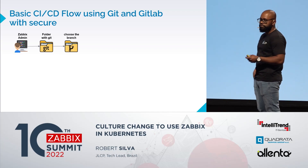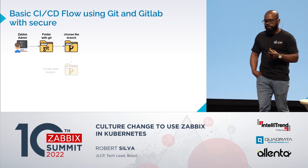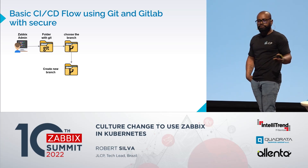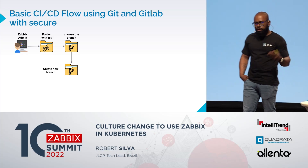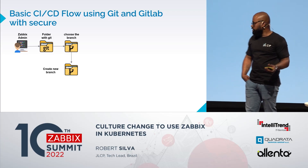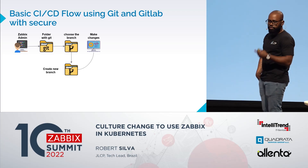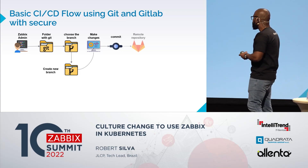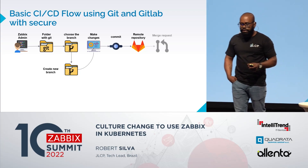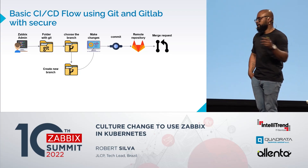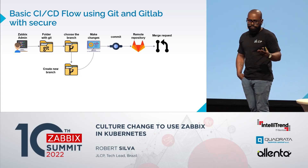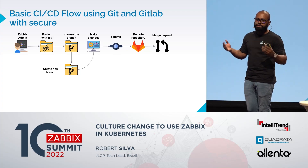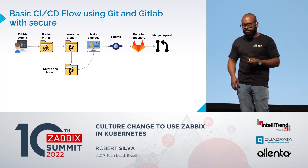Here's the basic CI/CD flow using GitLab. You, as the Zabbix admin, access your local folder with Git enabled. When you need to change some parameters — for example, adding a new alert script, an external script, or simply changing Zabbix parameters — you create a new branch, make your changes, write your files, and commit to the remote repository. Then you create a merge request, and your colleagues review and approve or reject your changes.